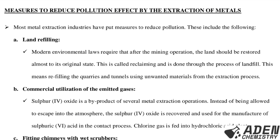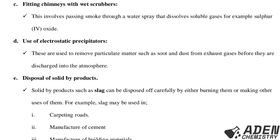B — commercial utilization of the emitted gases: sulfur dioxide is a by-product of several metal extraction operations. Instead of being allowed to escape into the atmosphere, the sulfur dioxide is recovered and used for the manufacture of sulfuric acid in the contact process. Chlorine gas is fed into the hydrochloric acid plant. C — fitting chimneys with wet scrapers: this involves passing smoke through a water spray that dissolves soluble gases, for example sulfur dioxide.